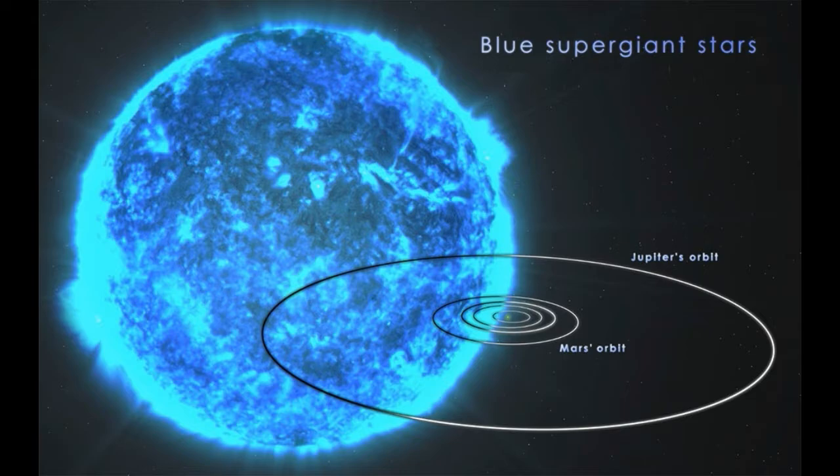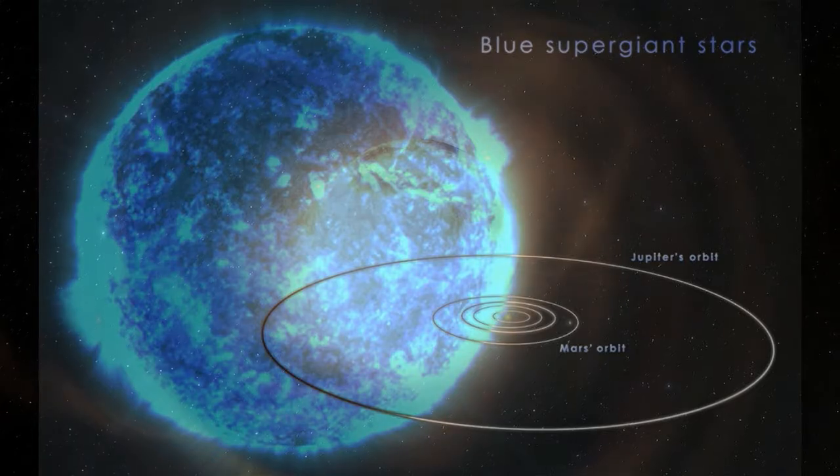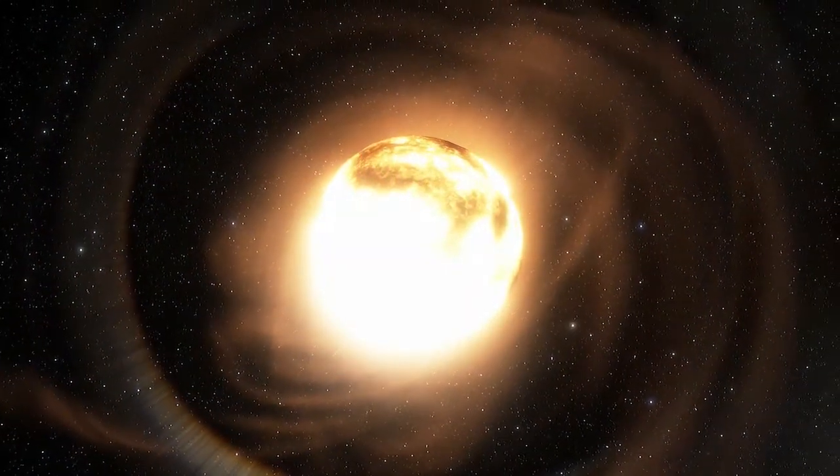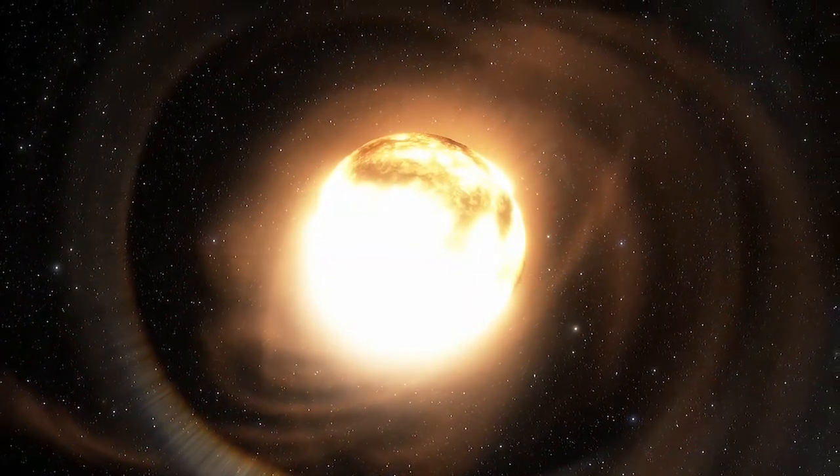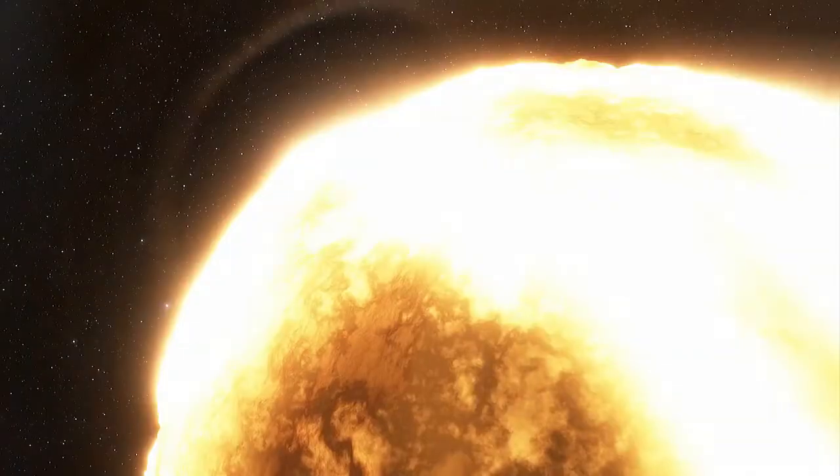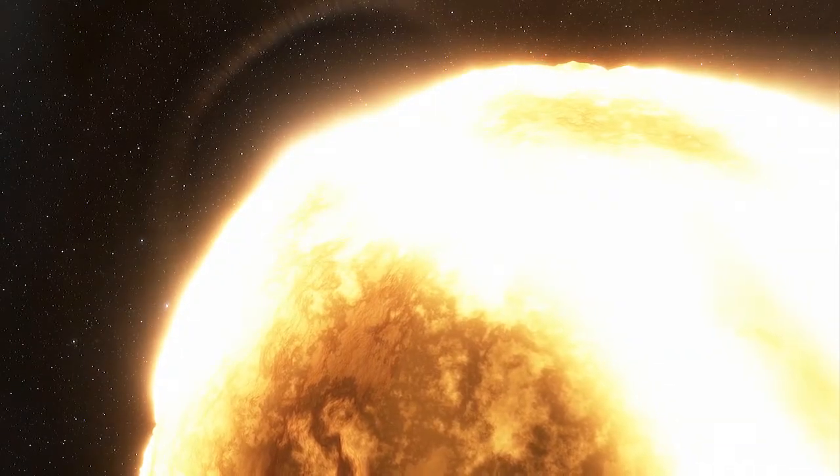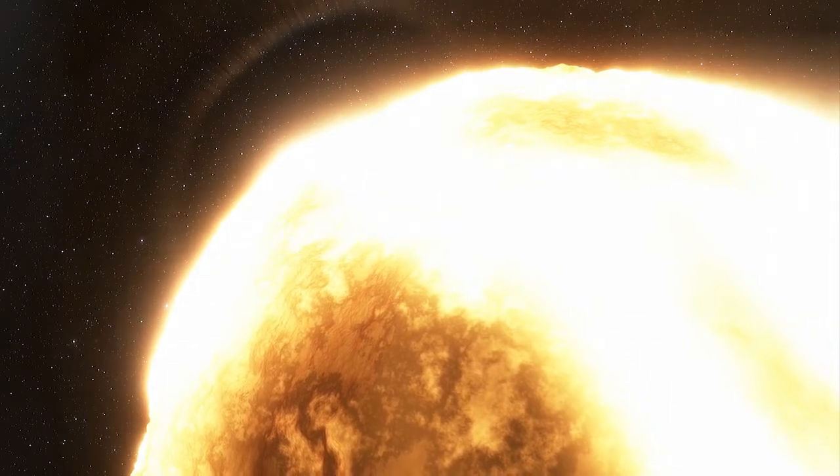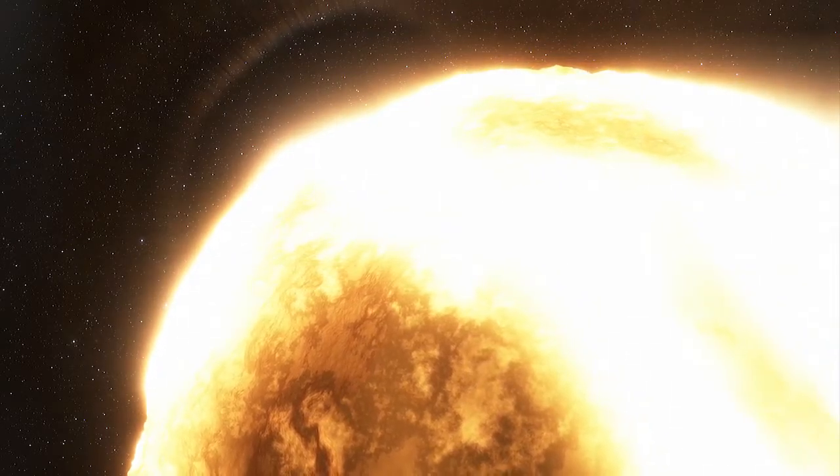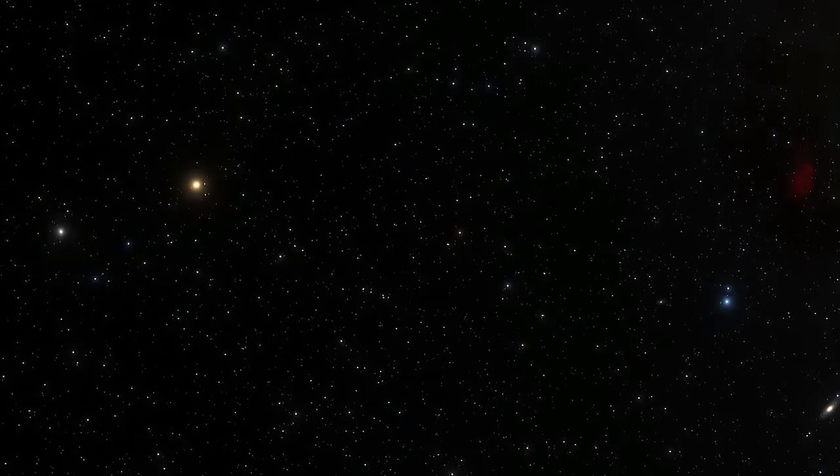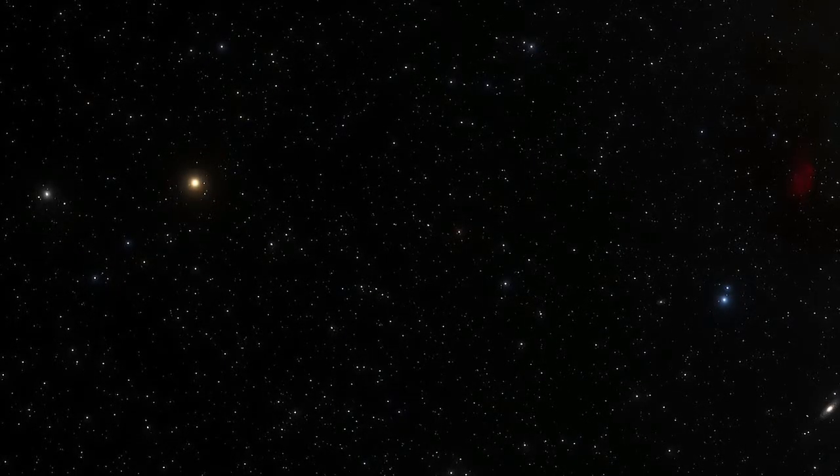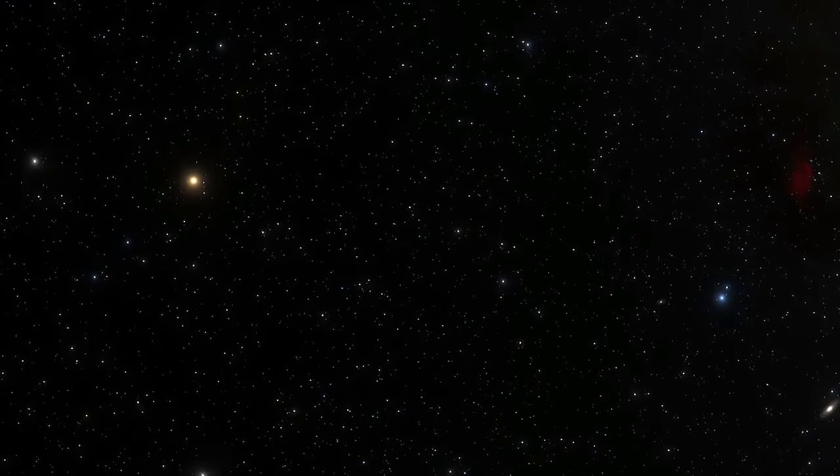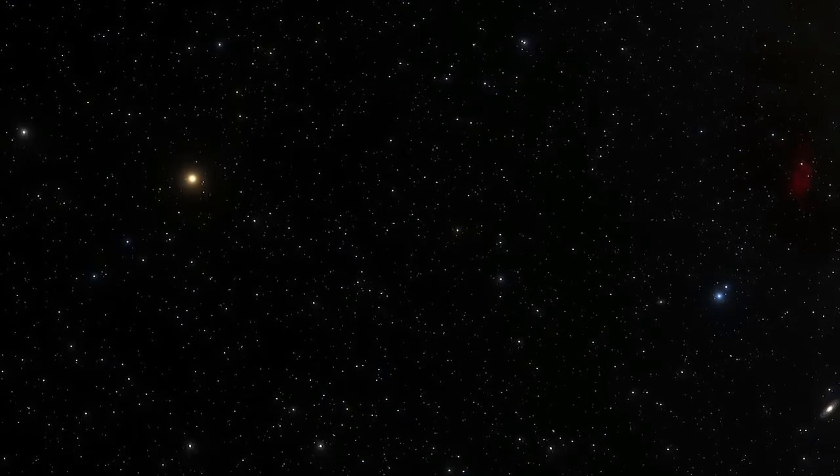When the largest and most massive main sequence stars reach the end of their lives, they end up as supergiants and hypergiants. The supergiants can have very low surface temperatures, ranging from 2,500 Kelvin to very high surface temperatures of 20,000 Kelvin. But one characteristic remains consistent, and that is their extremely large mass and size.